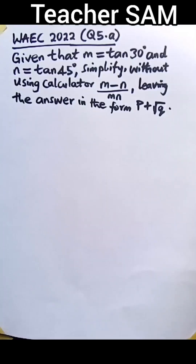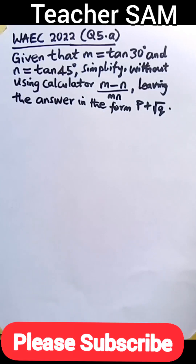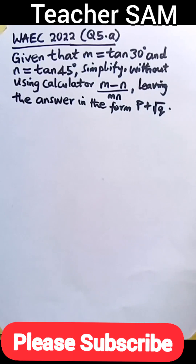Question 5a. Given that m is equal to tan 30 degrees and n is equal to tan 45 degrees, simplify without using a calculator m minus n all over m times n, leaving the answer in the form p plus root of q.